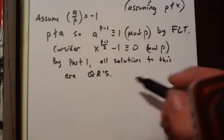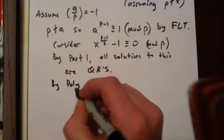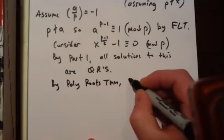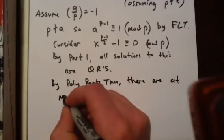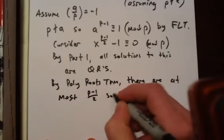And furthermore, we know from the polynomial roots theorem, which I'll just call poly roots theorem, there are at most P minus 1 over 2 solutions to that equation.